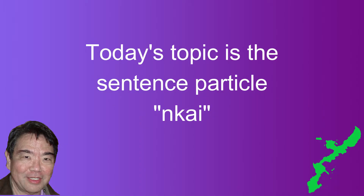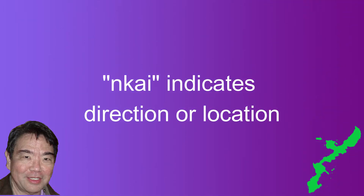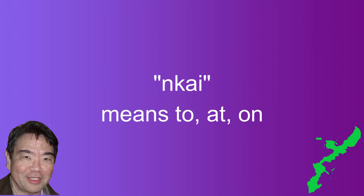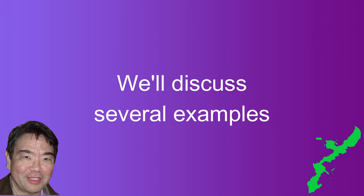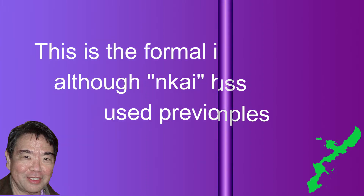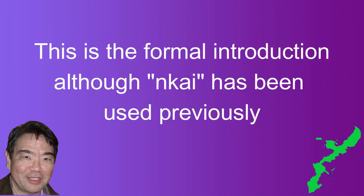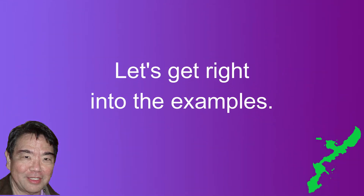Today, we'll be discussing the sentence pattern unkai. Unkai indicates direction or place — it means to, at, or on. We will see several examples of the usage of the particle unkai. I've used this particle in some examples in previous videos, but this will be the formal introduction to unkai. Okay, let's start.